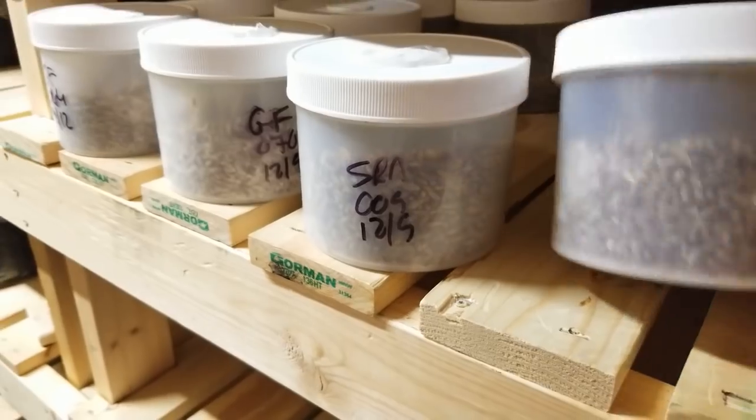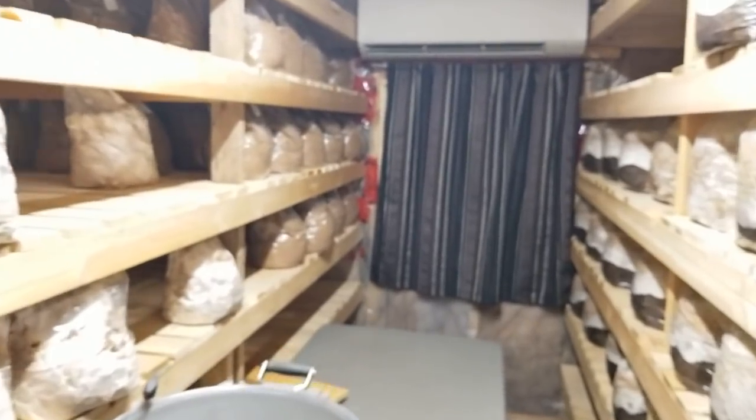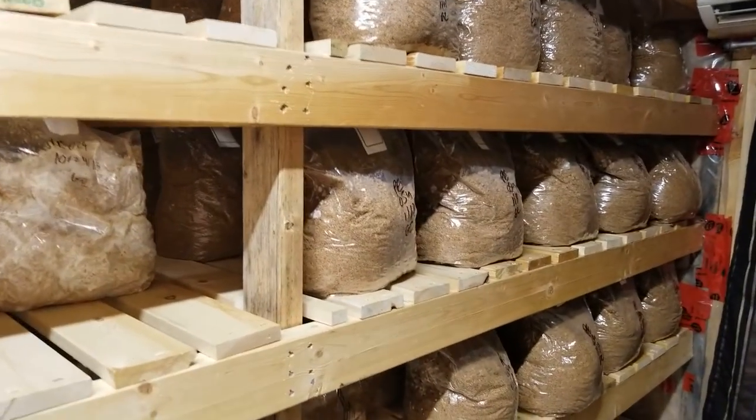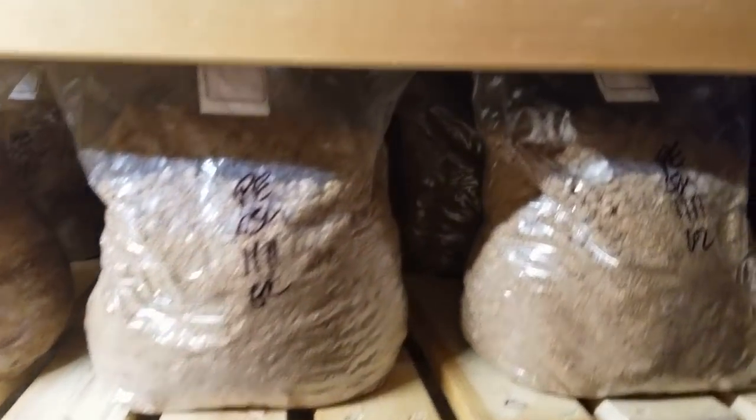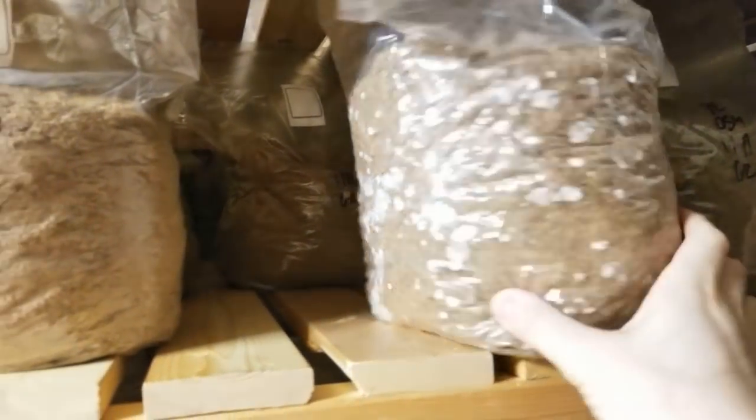We have some king stropharia already in jars as well. I always have clients that want to do garden patches, so I try to have some of this on hand. Here we just expanded our king oyster. We like to grow on sawdust spawn.